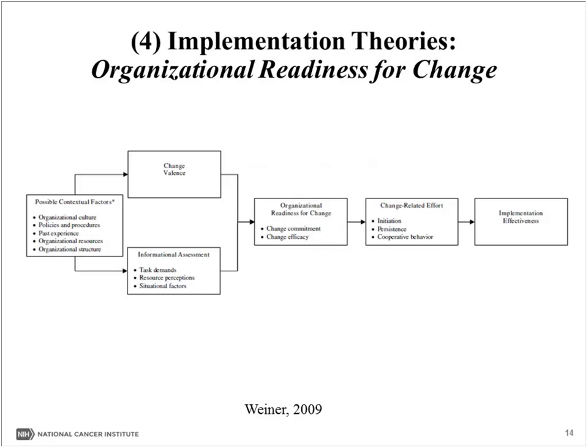An example of an implementation theory is Brian Weiner's 2009 model of Organizational Readiness for Change, informed by organizational behavior and organizational management. The model depicts different constructs hypothesized to affect one another, eventually leading to implementation effectiveness. Organizational theories are quite common in implementation science and are used to explain characteristics of the delivery setting — such as a clinic, hospital, or community-based organization — that can facilitate or impede implementation processes and outcomes.